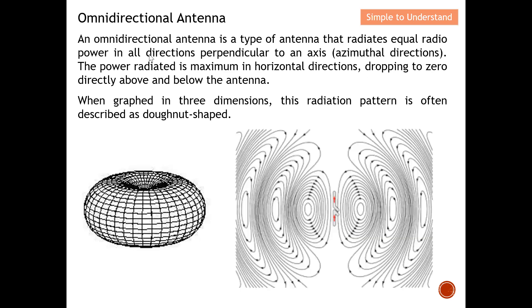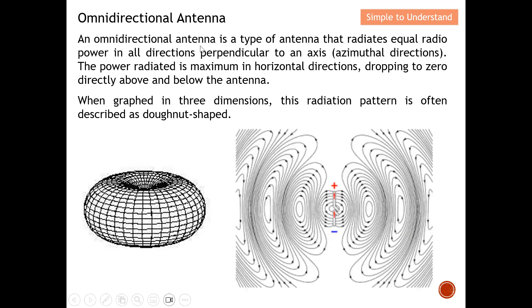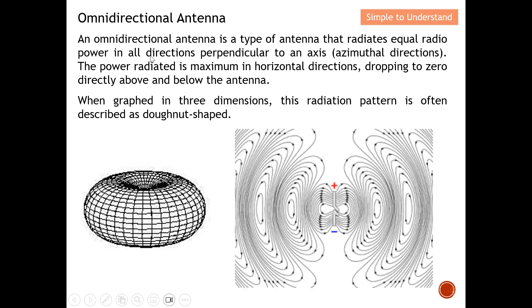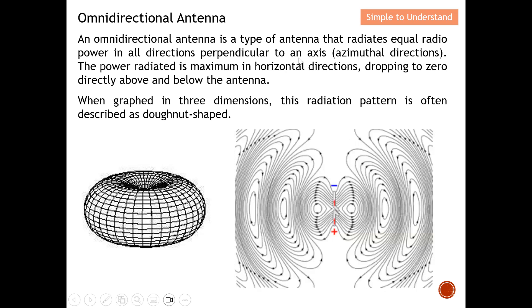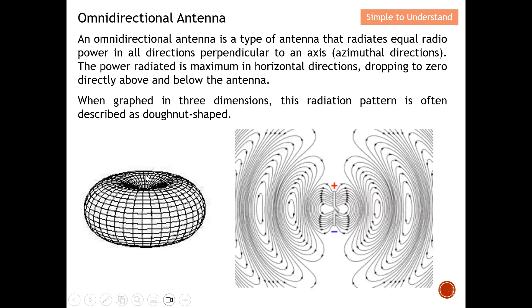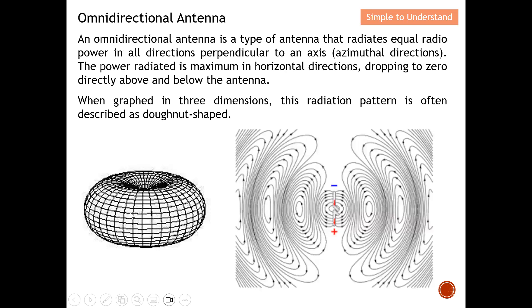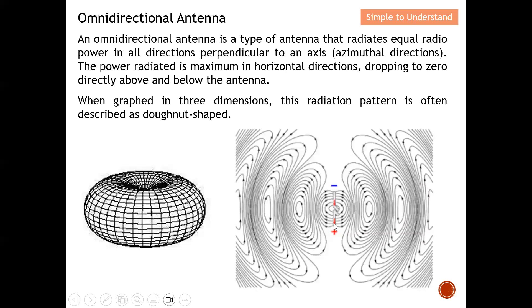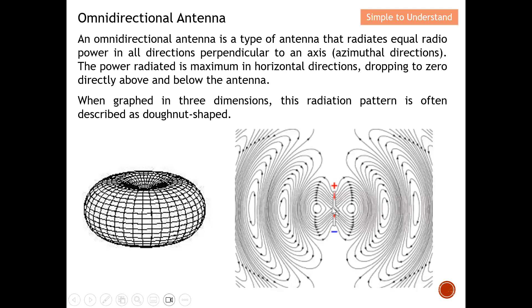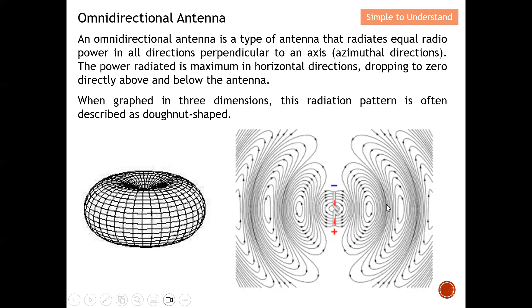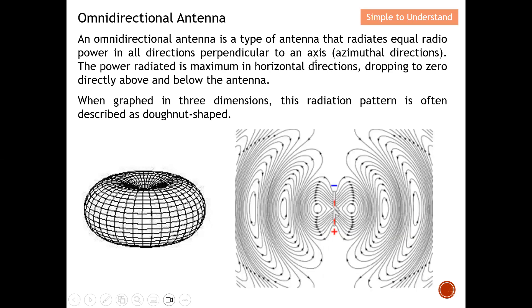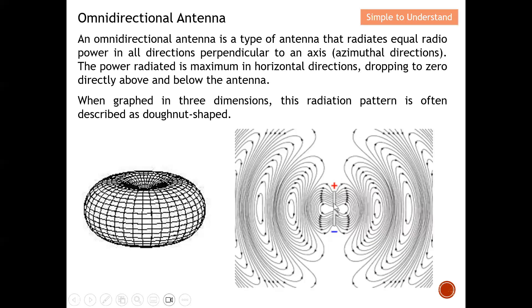An omni-directional antenna is a type of antenna that radiates equal radio power in all directions perpendicular to an axis. Perpendicular means to the left or to the right of the axis. As seen in the diagram, the antenna releases energy to the left and to the right — it radiates in all directions perpendicular to the axis, which is 90 degrees.